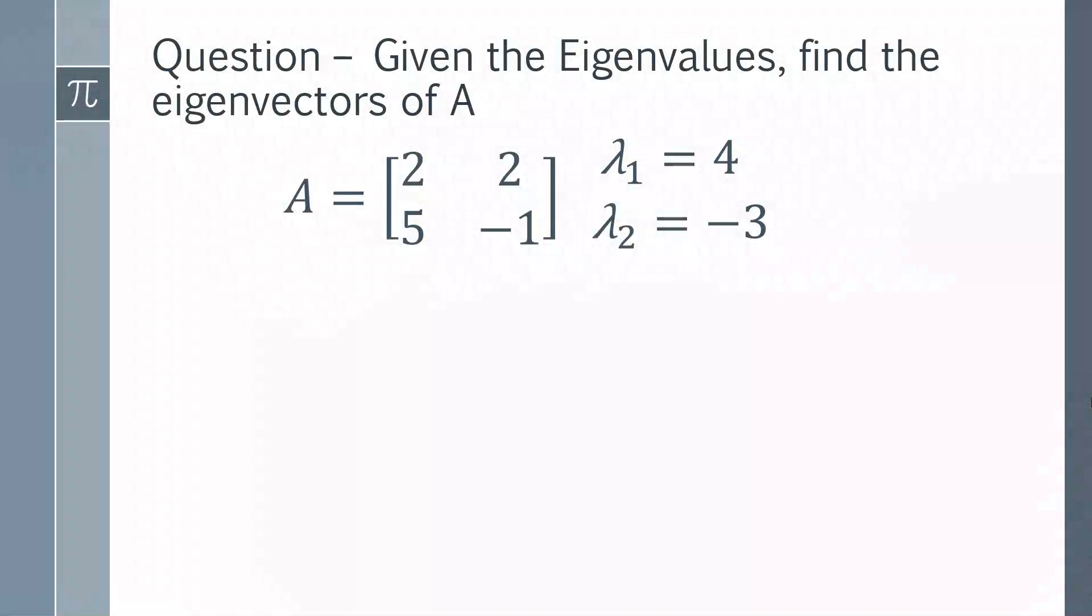In this problem we've been given the eigenvalues and a matrix A and we have to find the corresponding eigenvectors. To do this we're solving the fundamental eigenvalue-eigenvector problem, which is Ax = λx. That means A times our eigenvector is equal to the eigenvalue multiplied by the eigenvector.